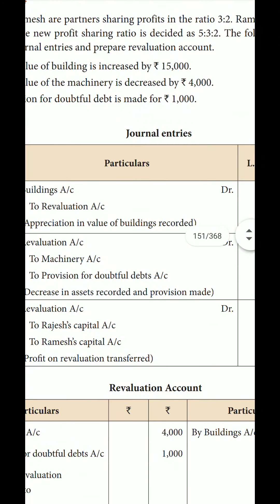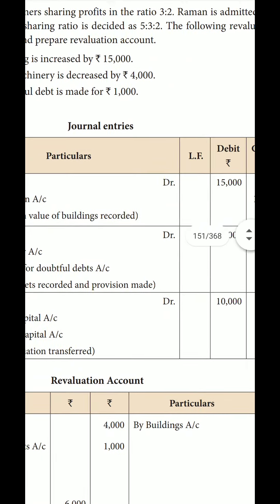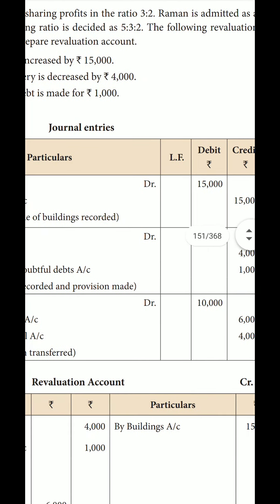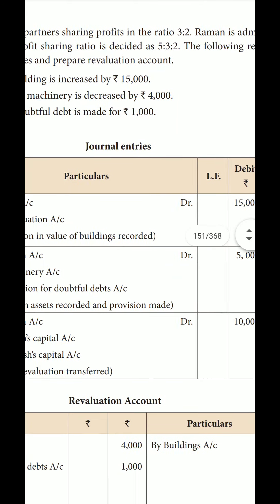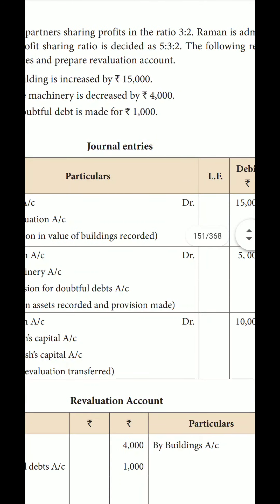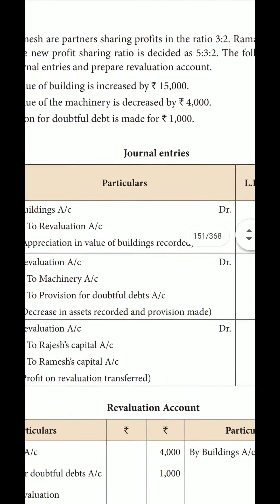The journal entry is: Revaluation Account debit to Machinery Account, and to Provision for Doubtful Debts. The loss on machinery is 4,000 and provision for doubtful debts is 1,000, so the total loss is 5,000.